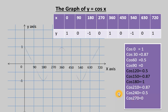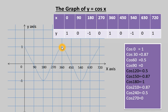Now let's check the graph of y = cos x. From 0° to 90°, the value decreases from 1 to 0. From 90° to 180°, it decreases again to -1. Then from 180° to 270°, it increases back to 0. And from 270° to 360°, it increases further to 1.